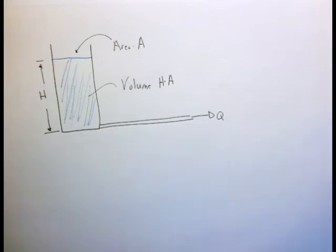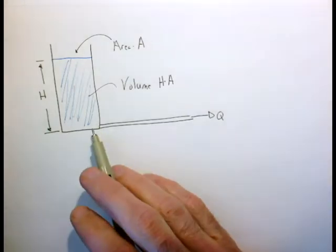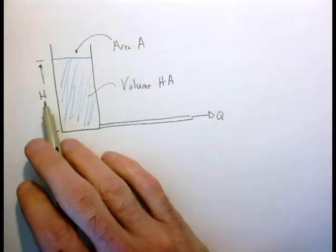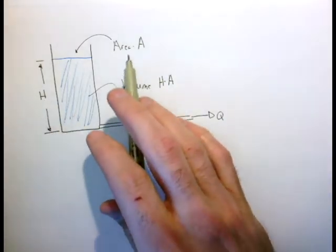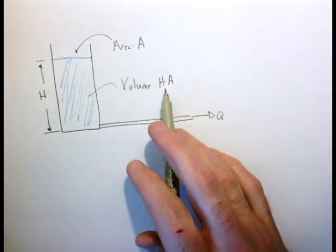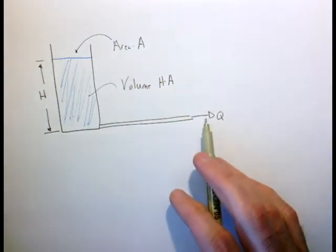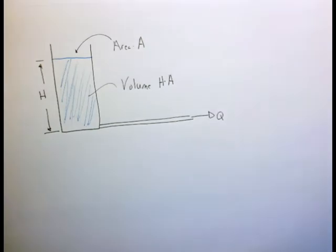Let's consider the same problem from the last lecture: water draining out of a container. We have a container with height h, area a, volume h times a, and volumetric flow rate q.